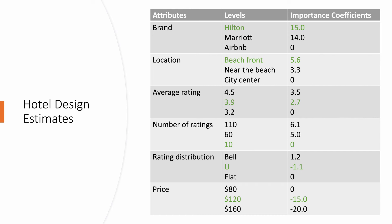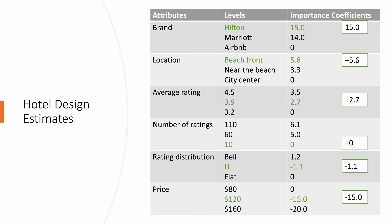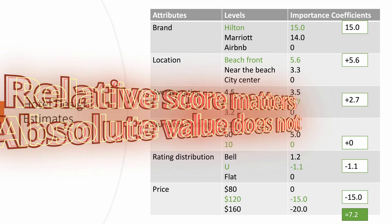What are these importance points? Let me give you a more specific example. With these importance points, we can score a hotel with a combination of different attributes. For example, here we have a hotel that is Hilton Beachfront, average rating is 3.9, number of ratings is 10, and the rating distribution is a U-shaped distribution — so there are quite a few very high and quite a few very low ratings. And the price is $120. The importance scores on these different levels are on the right. To score this hotel, what we have is 15 + 5.6 + 2.7 + 0 − 1.1 − 15, and the total is 7.2. This score itself is not very meaningful — it is however useful when you compare this hotel with a different hotel specification. So the relative score matters; the absolute value itself does not.